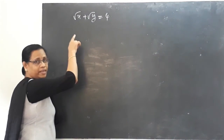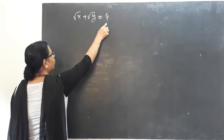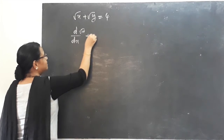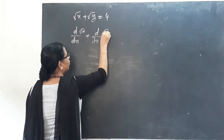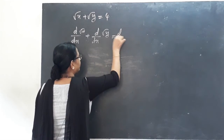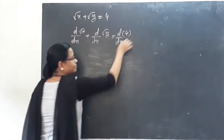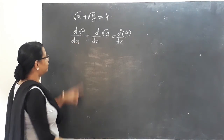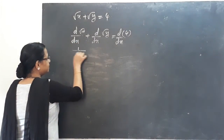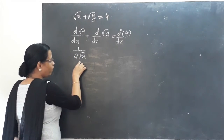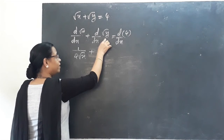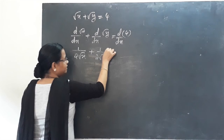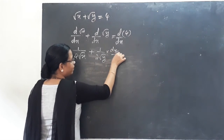Next question: given root x plus root y equals 4. Differentiating both sides, d/dx of root x plus d/dx of root y equals d/dx of 4. This gives 1 divided by (2 root x) plus (1 divided by 2 root y) times dy/dx equals 0.